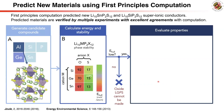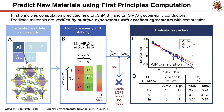We then use AIMD simulations to predict the lithium conductivity of the predicted silicon-substituted LGPS materials. They all show lithium conductivity as high as the original LGPS as predicted by AIMD. These materials were further confirmed experimentally — they were synthesized in the laboratory and their measured lithium conductivity was in good agreement with computation predictions.